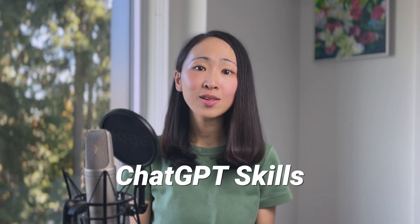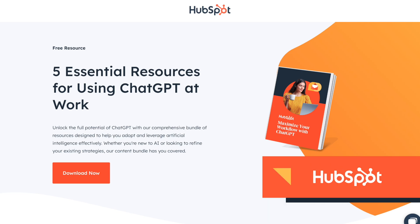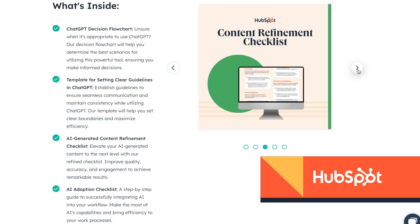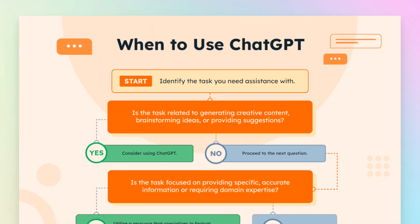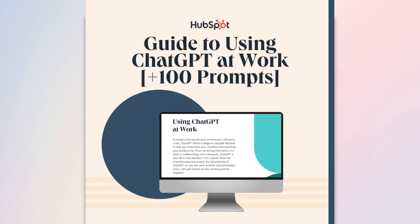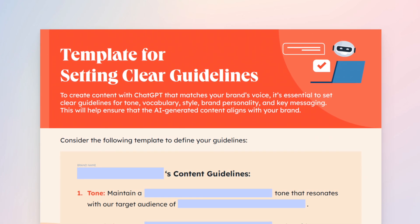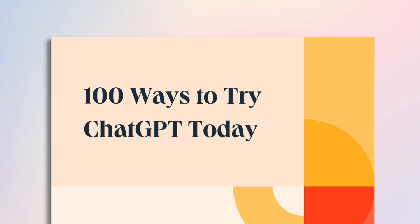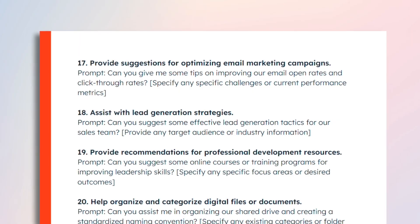If you want to get better at using AI tools for work and improve your ChatGPT skills — whether it's for content research, creation, or any other tasks — I highly suggest you check out this bundle from HubSpot that contains five essential resources for using ChatGPT at work. It has great resources like a decision flow chart, content refinement checklist, and guidelines on how to use it more effectively for day-to-day work tasks. My personal favorite sections are the content style guideline template and the 100-plus ChatGPT prompts. You can download this in the description below for free. This bundle was made by HubSpot, which is today's video sponsor.